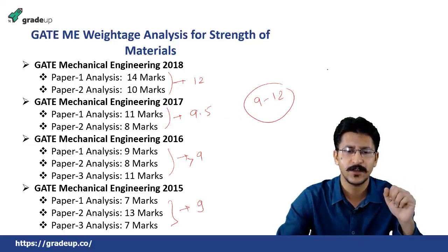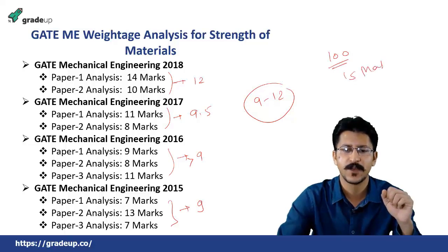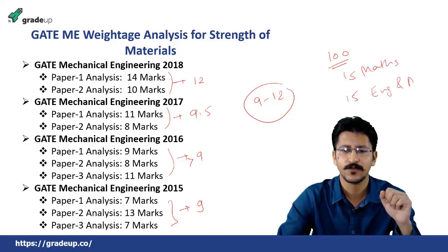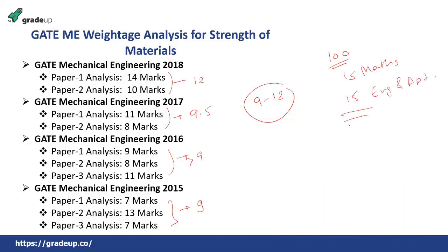If you consider the GATE examination in which the total is 100 marks, 15 marks are for mathematics and 15 marks for English and aptitude — if you exclude those, you are left with 70 marks of technical syllabus. Out of those 70 technical marks, if 9 to 12 marks are from this subject, strength of materials, that works out to approximately 13 to 14 percent weightage.